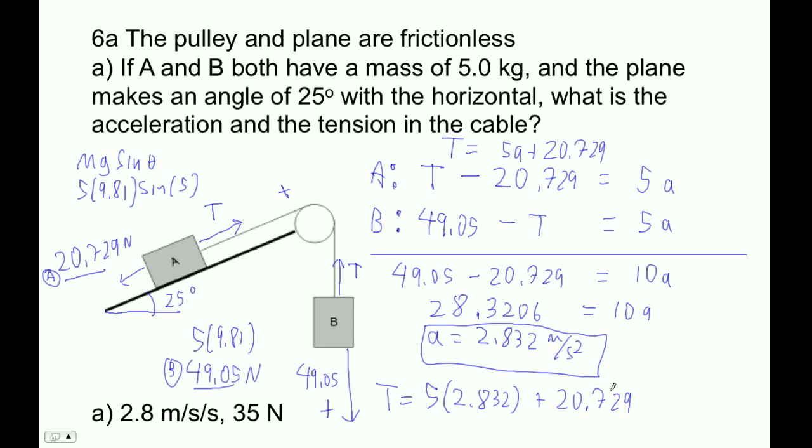So that guy divided by 10, I got the acceleration. Now I'm going to go times 5 plus 20.729, and I'm going to get 34.8897. So T is equal to 34.8897, which with two sig figs would be 35 newtons and 2.8 meters per second squared. So we're going to tape this down. Thank you.